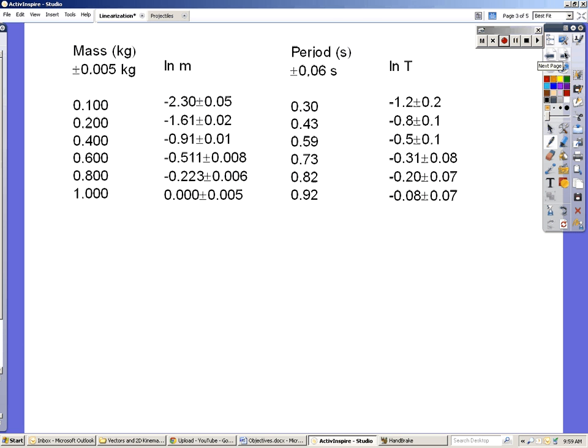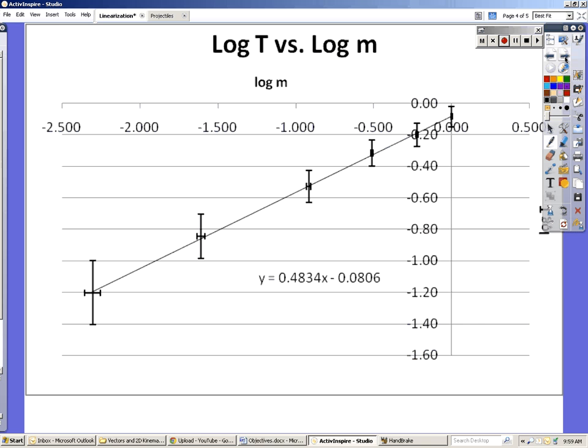So then what you do is you take the mass, and you get the natural log of each value of the mass, and you also get the uncertainties, which you know how to do now. And you do the same thing with T. And then you plot it, and it is in fact linear.